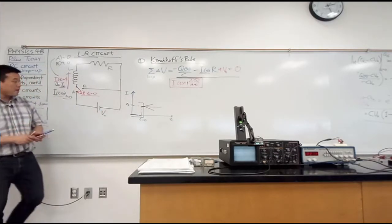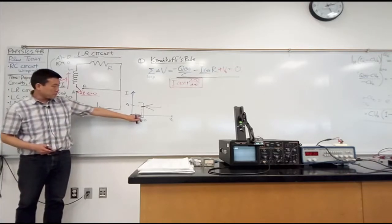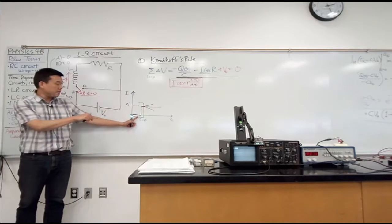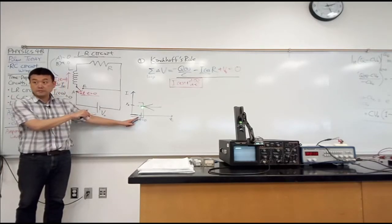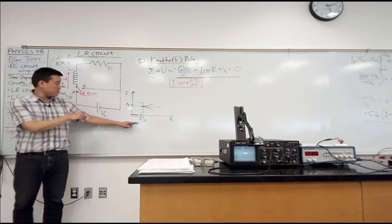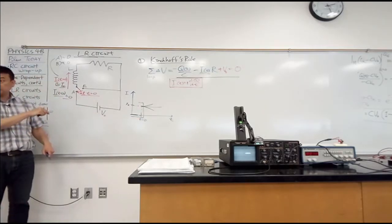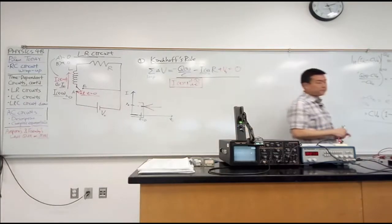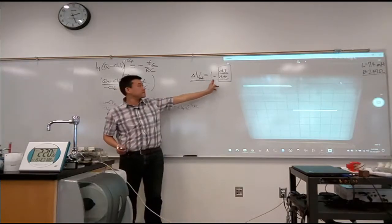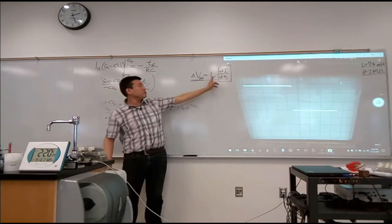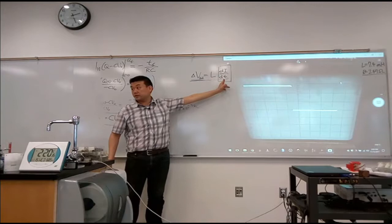If I want to say my current suddenly changes to a new value, this requires an infinite rate of change when it happens. So I cannot have an infinite rate of change without an infinite voltage. Here's another way to intuitively, sort of conceptually explain this. Inductor, resistor, not current, the resistor resists current. Inductor resists change in current.